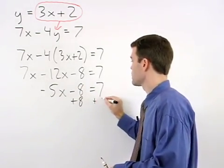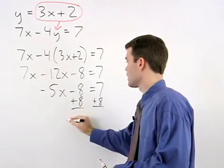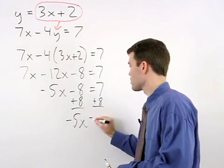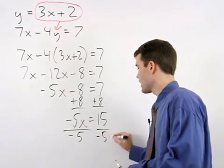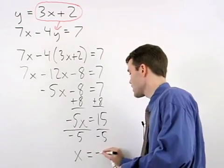Add 8 to both sides, and negative 5x equals 15. Divide both sides by negative 5, and x equals negative 3.